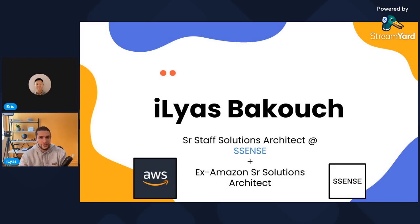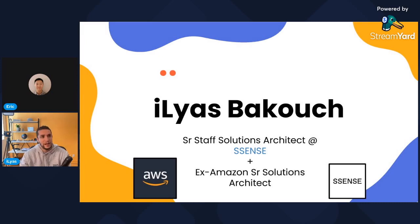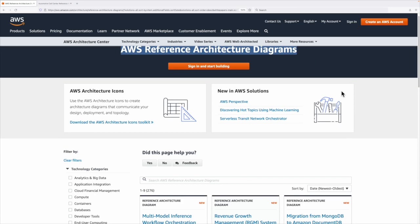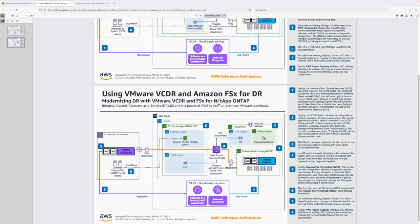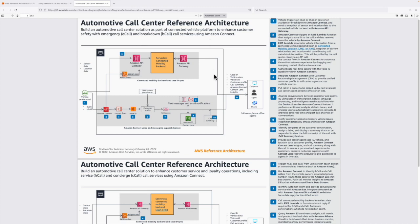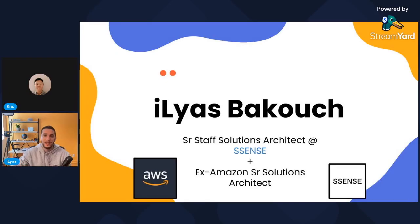The second thing is reference architectures. As software engineers, we are used to design patterns — we use them every day, sometimes without even knowing it, baked into frameworks like dependency injection or singleton. Well, there are design patterns for architecture as well. I advise people to study these reference architectures. Part of my job at AWS was, when I saw a few customers having similar problems, coming up with a reference architecture to reuse, share, and sometimes publish — so others don't have to reinvent the wheel.